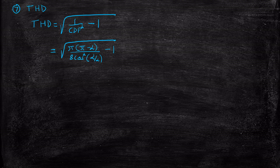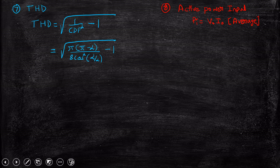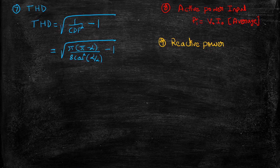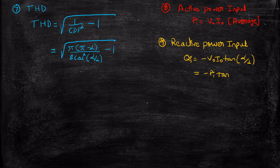The active power input P_i is the product of the average output voltage and average output current — always remember this. The reactive power input Q_i = −V_out · I_out · tan(α/2). Since V_out · I_out = P_i, this can also be written as Q_i = −P_i · tan(α/2).